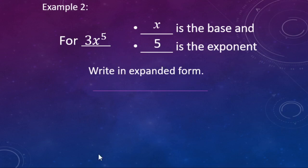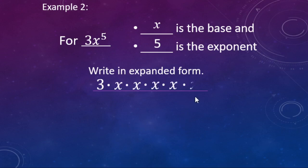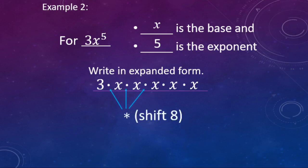Writing 3x⁵ in expanded form: we have a three, and since the three and the variable are next to each other it's implied multiplication, so there's a three times, and then five x's being multiplied. So we have three times x times x times x times x times x — a three and then one, two, three, four, five x's. Pretty straightforward.